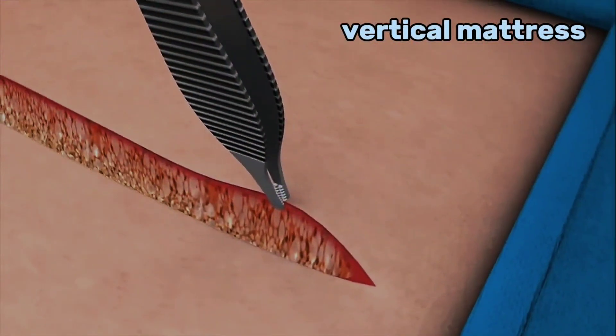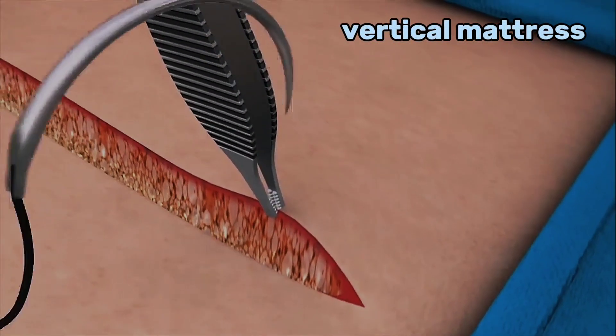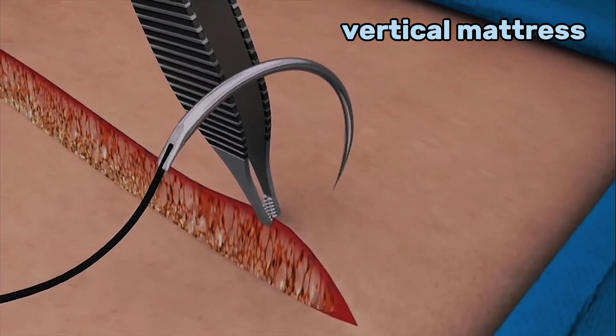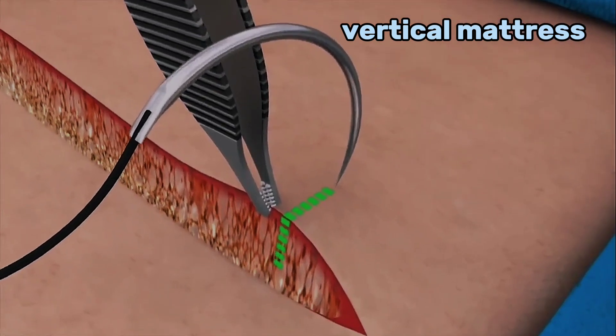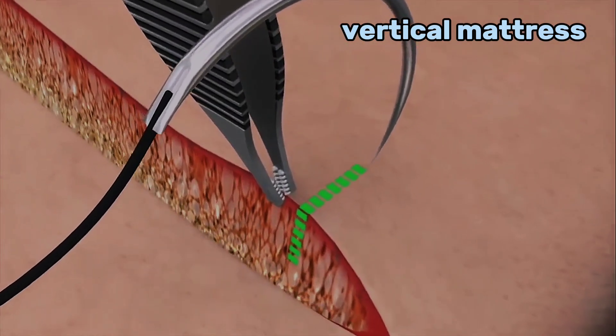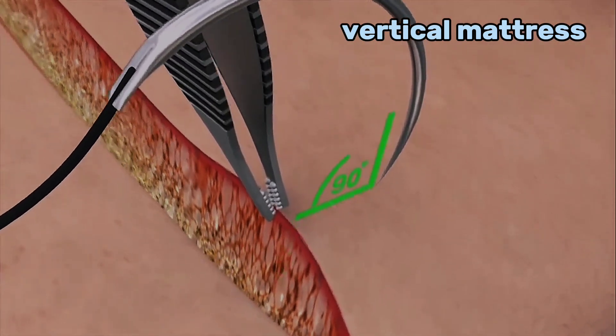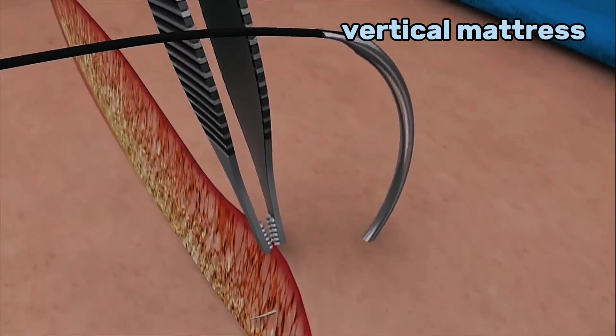Use the toothed forceps to gently lift the skin edges and hold the skin when inserting the needle. Take a slightly larger bite than normal to start the vertical mattress suture. Insert the needle with the point at 90 degrees to the skin.